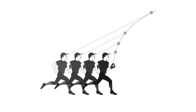Another example of a heuristic in operation: consider the gaze heuristic. The gaze heuristic is a tool that people, and dogs, use to catch balls. The heuristic is simply this: maintain the ball at a constant angle of gaze. If you move to keep this angle constant, you will end up where the ball lands. Obviously, this is easier than calculating where you should be from the velocity of the ball, the angle of flight, the effect of wind resistance, and so on.